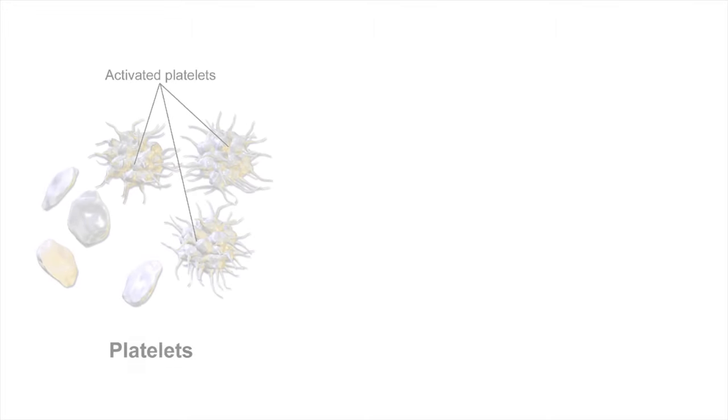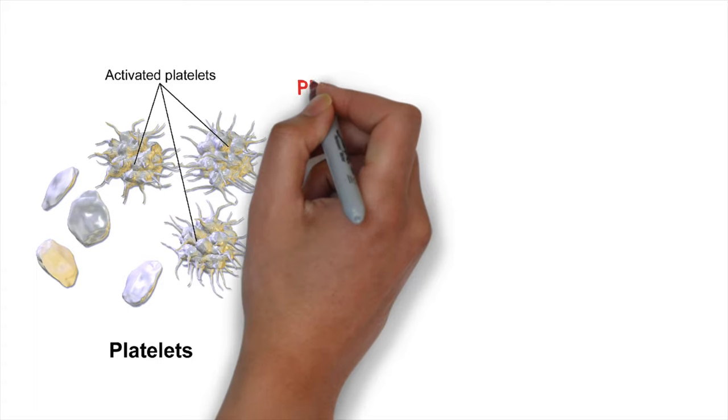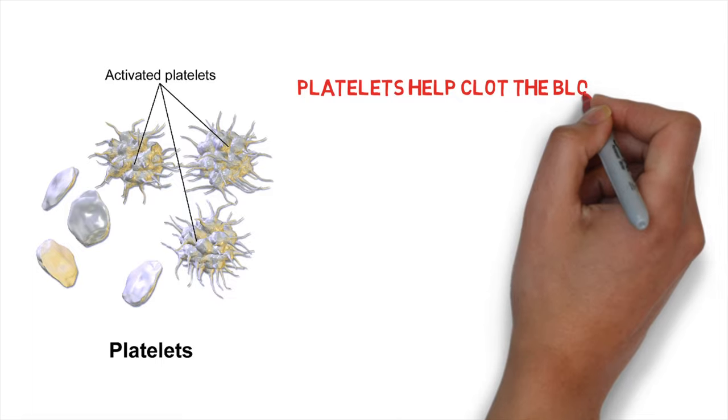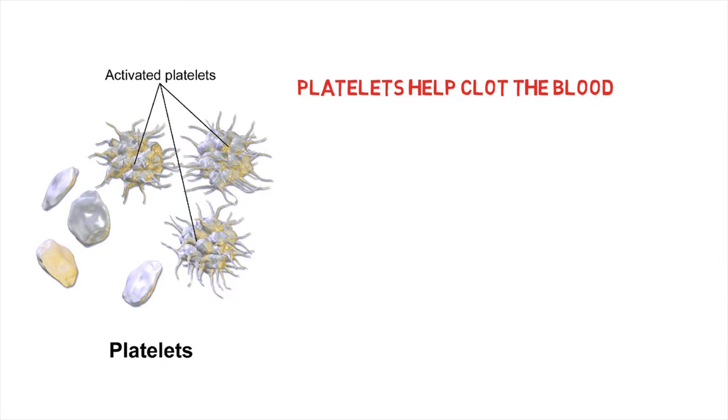Then we have the platelets. And what the platelets actually are is they are fragments of cells. They don't have any nucleus, and their primary role is to help clotting the blood. So they're made from small fragments of cell with no nucleus.